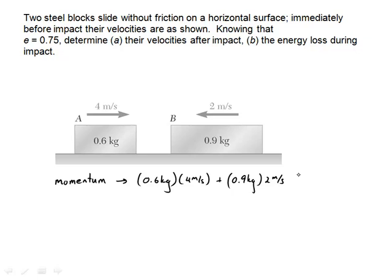And I would get 0.6 kilograms times 4 meters per second plus 0.9 kilograms times 2 meters per second. That's going to be equal to the momentum before. And that should equal the momentum after the collision, which is 0.6 kilograms times u_a plus 0.9 kilograms times u_b. And I better correct something here. 2 meters per second is to the left. So that's negative 2 meters per second.